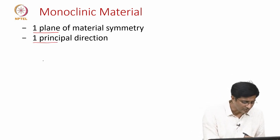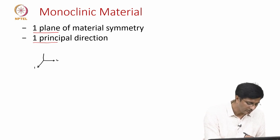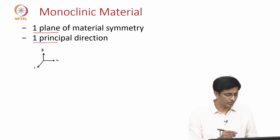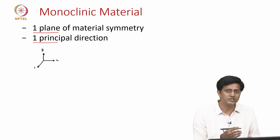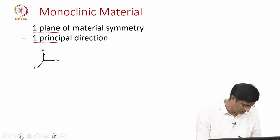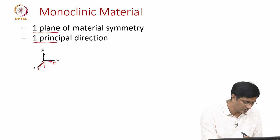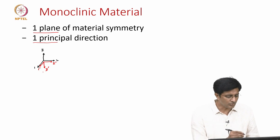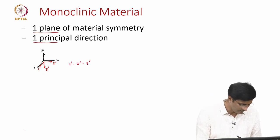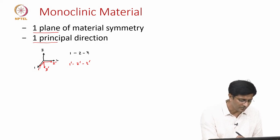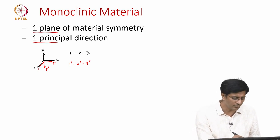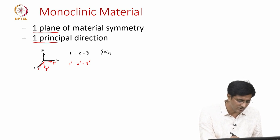Let us consider the coordinate system 1, 2, and 3 — three orthogonal coordinates. We will now consider another coordinate system where the 1-2 plane is the plane of material symmetry. In the new coordinate system, 1-dash and 2-dash are the same as 1 and 2, but the third direction 3-dash is opposite to 3, going downwards. So these are the two coordinate systems: 1-dash, 2-dash, 3-dash is the second, and 1, 2, 3 is the first. Now let us define the relation between stress and strain in the first coordinate system: sigma_ij in the first coordinate system equals stiffness matrix C times strain epsilon_ij in the first coordinate system.